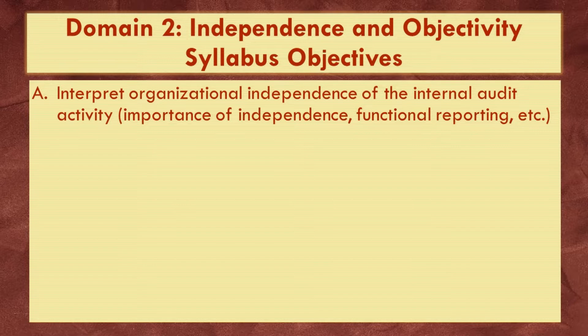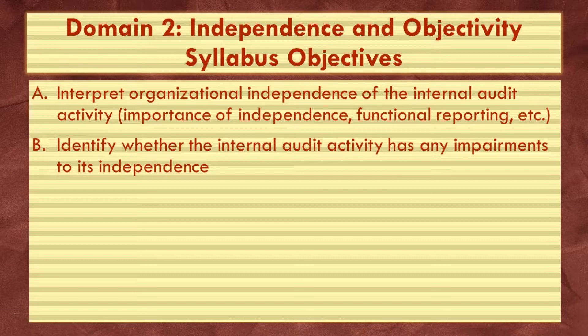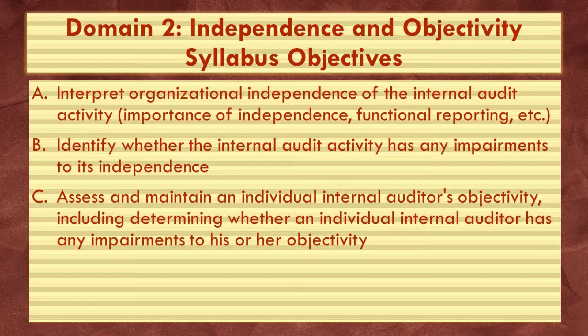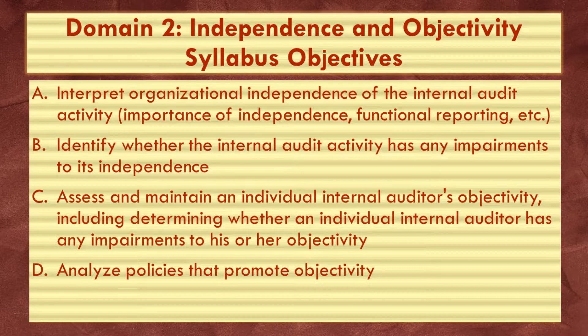These are the syllabus requirements for the second domain of the CIA exam, Part 1, and the related cognitive learning level. A and B are tested at the basic level, and C and D are tested at the proficient level, which means the Institute of Internal Auditors expects you to have a more detailed and thorough knowledge of C and D. Today, we will discuss independence, which relates to A and B.